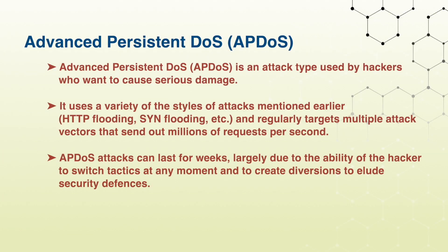The next one is Advanced Persistent DoS. This is an attack type used by hackers who want to cause serious damage. It uses a variety of attack styles mentioned earlier, such as HTTP flooding, SYN flooding, etc., and regularly targets multiple attack vectors that send out millions of requests per second. Advanced Persistent DoS attacks can last for weeks, largely due to the ability of the hackers to switch tactics at any moment and to create diversions to elude security defenses. This attack can be very advanced and complicated.